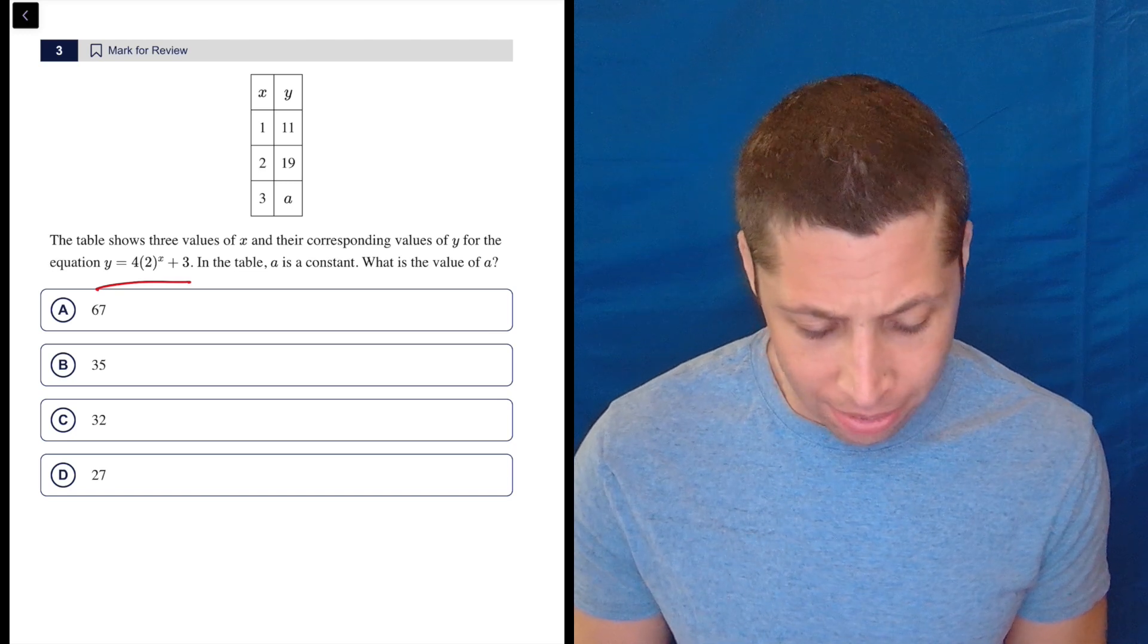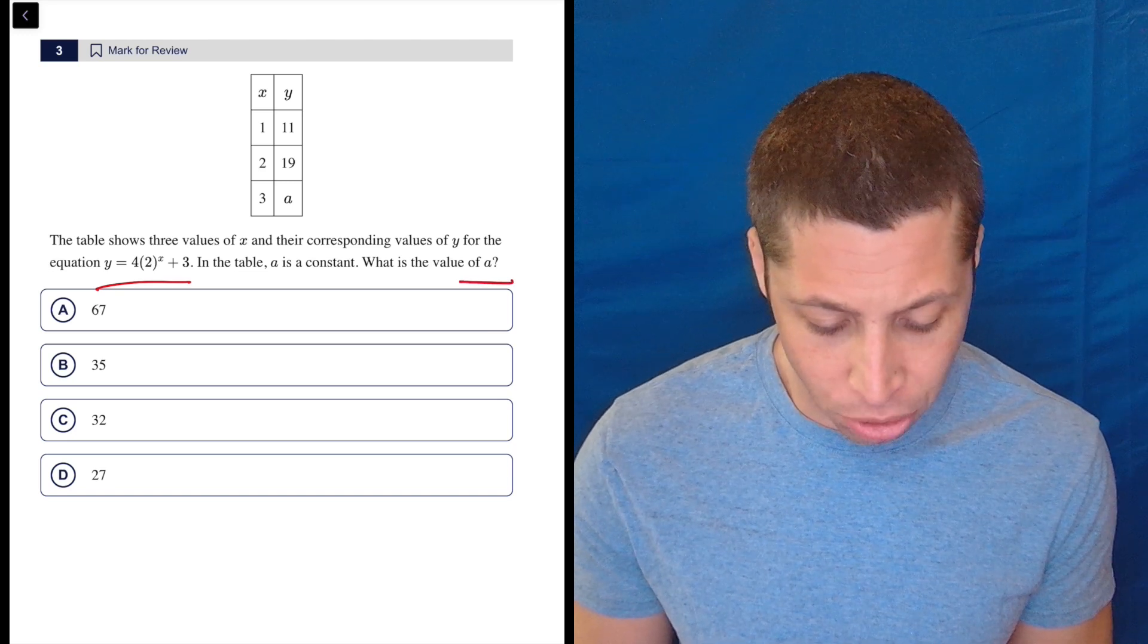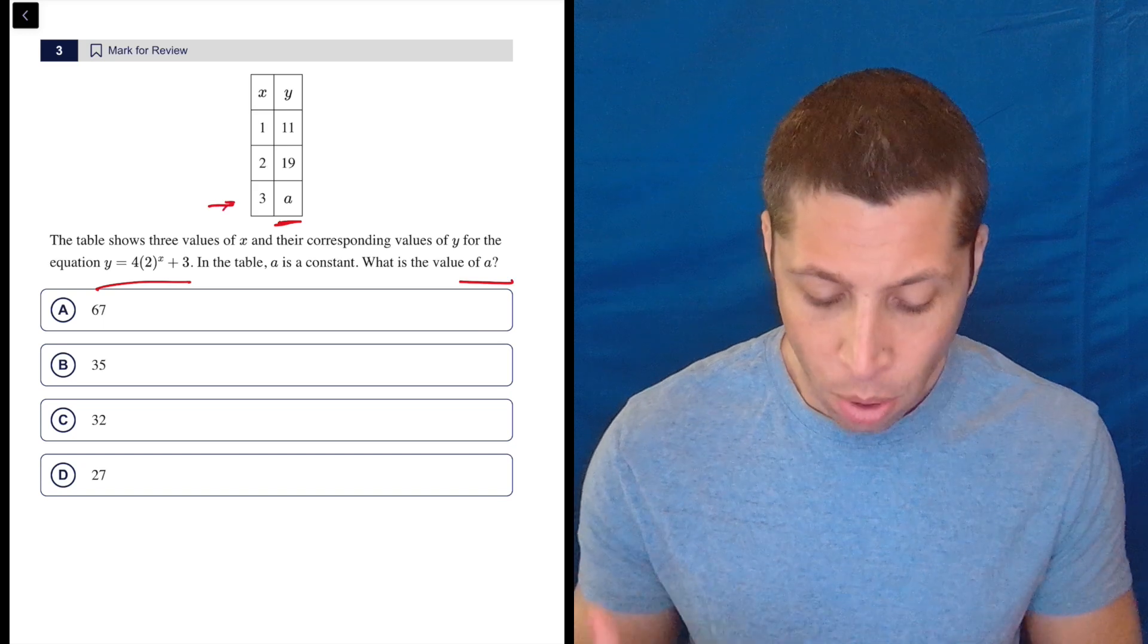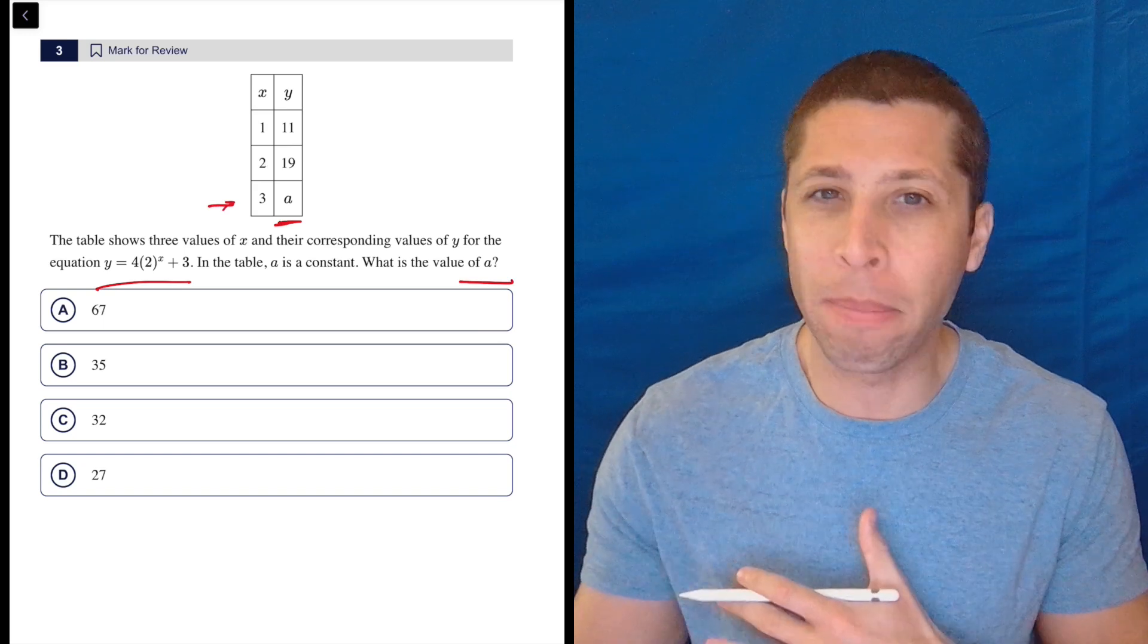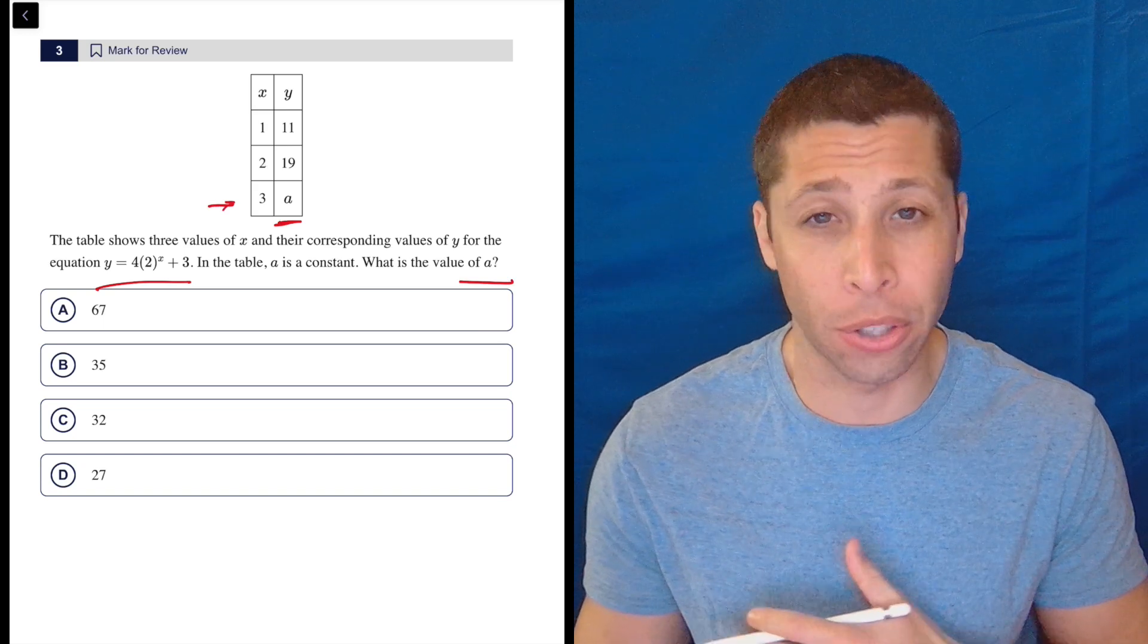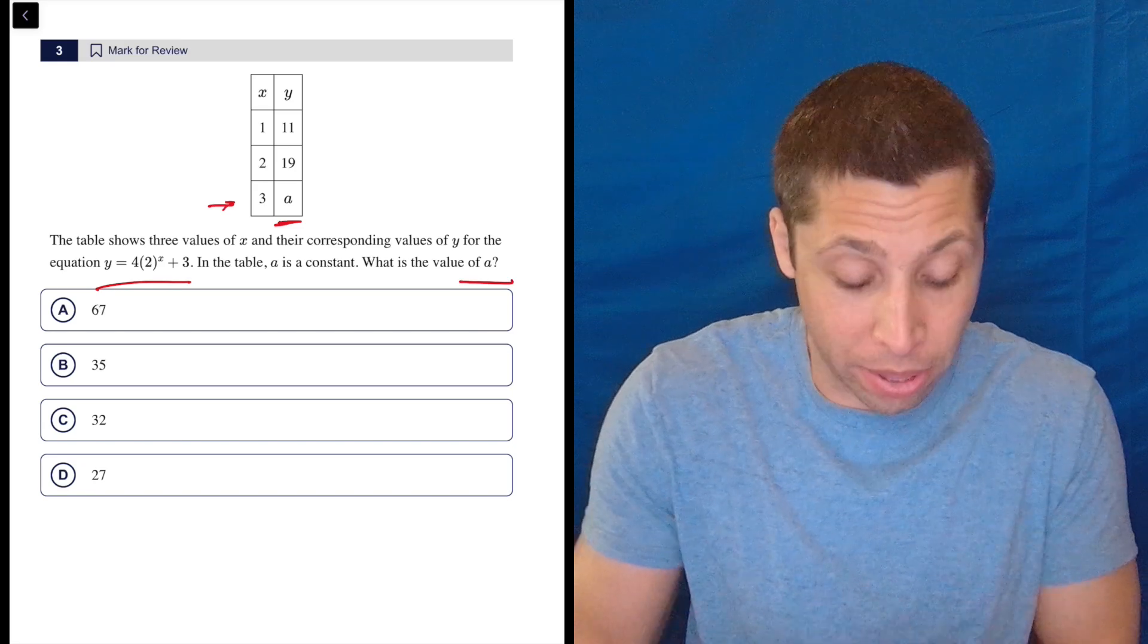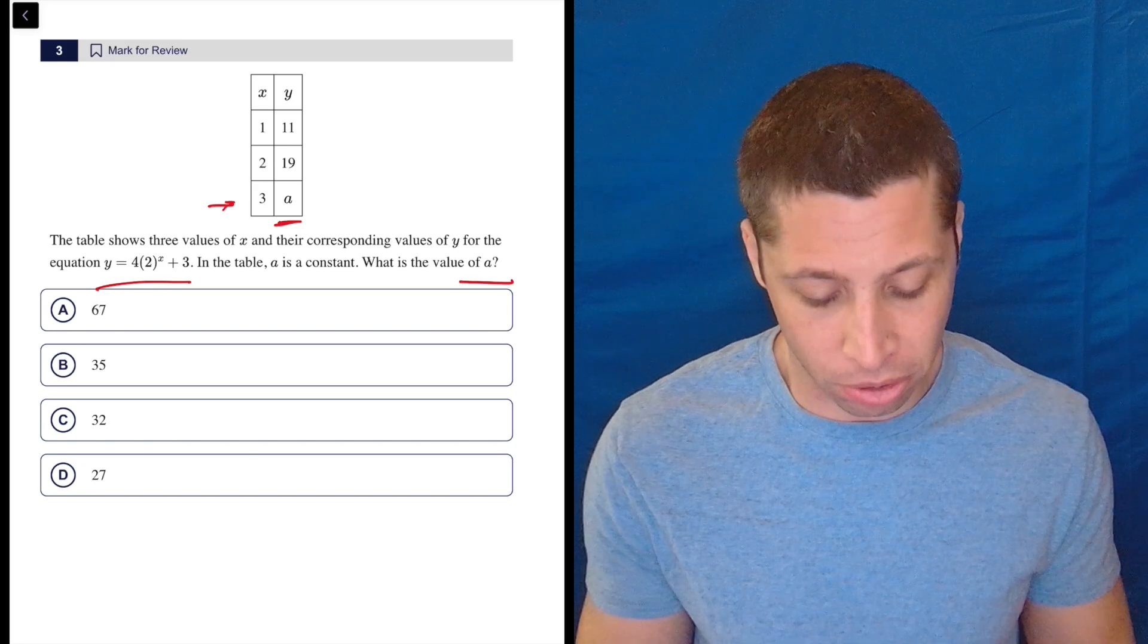Now, I don't know why they gave us so many. What is the value of a? That's just the y coordinate for this x of three. And we have the full equation. There's not like some missing constant that we need to solve for first, which actually does happen quite a bit with this kind of phrasing of a question. So we can just plug this in.